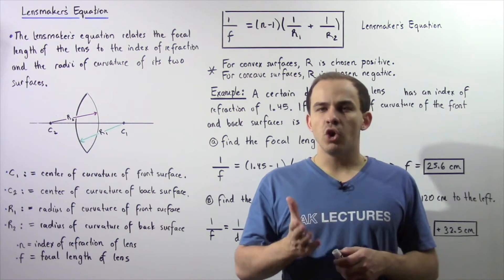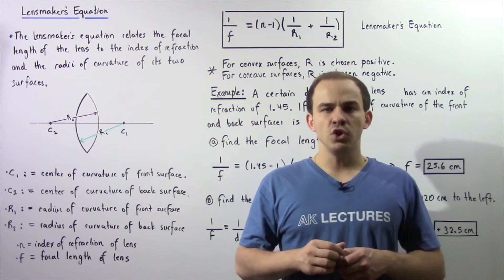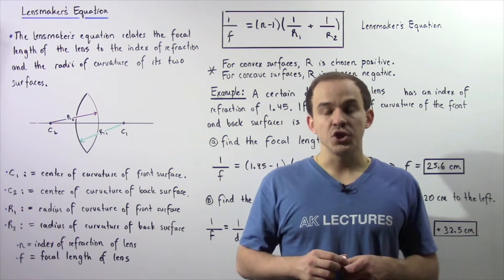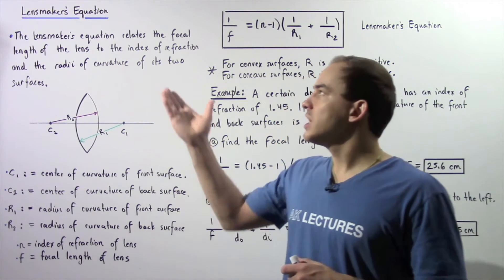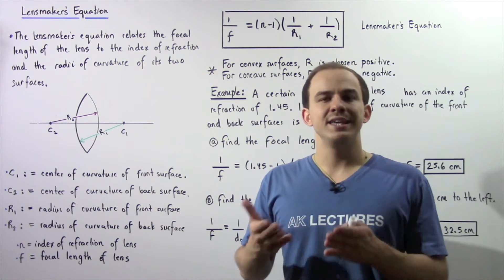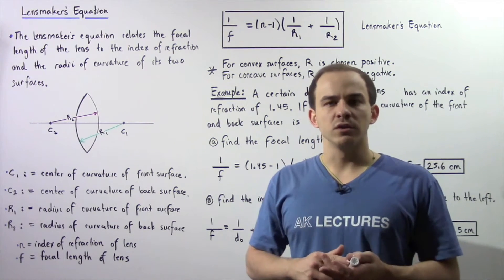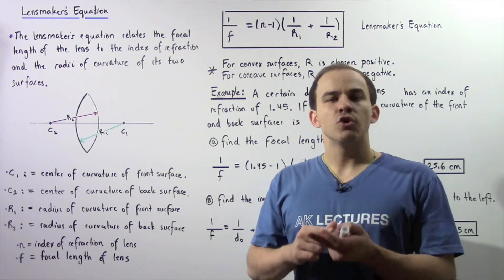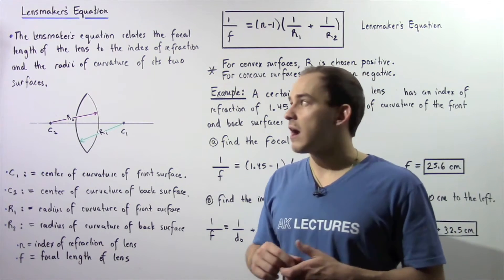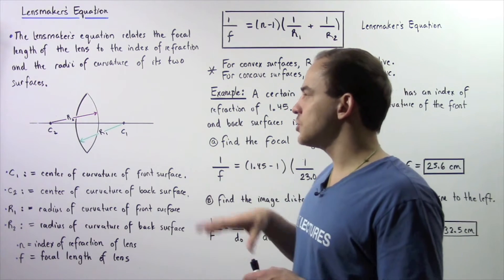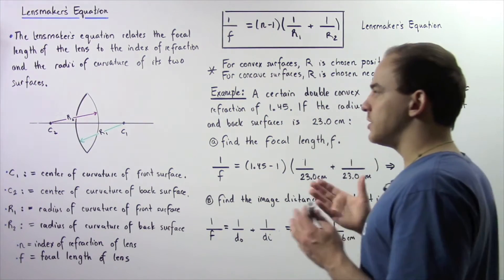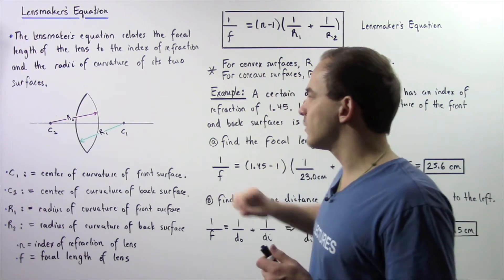The thin lens equation is not the only equation we can use to find the focal length of a convex or a concave lens. We can also use an equation known as the lens maker equation. The lens maker equation essentially gives us a relationship between the focal length of our lens, the radii of curvature of the front and back surfaces, and the index of refraction of the lens. Let's see exactly what the lens maker equation is by looking at the following diagram.